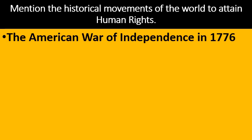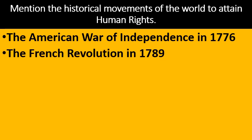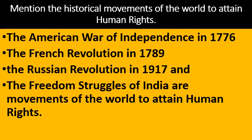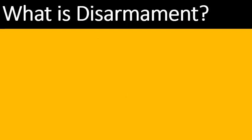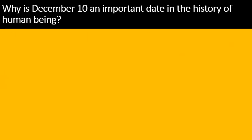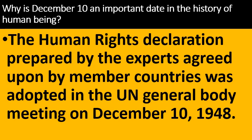The American War of Independence in 1776, the French Revolution in 1789, the Russian Revolution of 1917 and the First War of Indian Independence were a few examples of historical movements to attain human rights. Why is December 10th an important date in the history of human beings? The human rights declaration prepared by experts and agreed upon by member countries was adopted in the UN General Body meeting on December 10th, 1948. That is why every December 10th we celebrate World Human Rights Day.